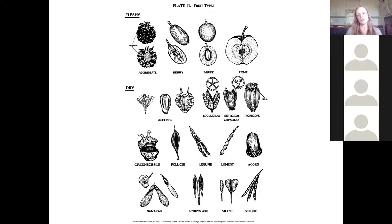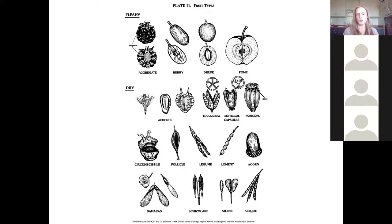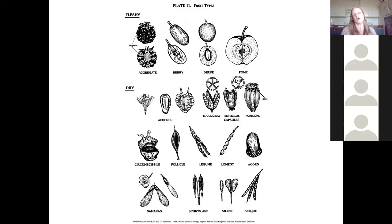Samaras are the name for seeds that come from maple trees — those seeds that twist like helicopters and slowly float to the ground when you throw them in the air. We've also got schizocarps, silicles, and siliques. Once you can identify what type of seed comes from a certain plant, you'll be able to identify plants down to a plant family. In a botany class, you typically learn to identify different families of plants. Just like families of people, plant families are closely related plants that usually have the same types of flowers and seeds.